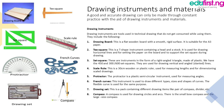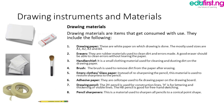Now let's move on to drawing material. Drawing materials are items that get consumed with use. They include: number one, drawing sheet — once a drawing sheet is used it can only be used for one drawing and after that you cannot reuse it again. Number two, eraser — an eraser is a rubber material used to clean dirt and errors made. A good eraser should be able to clean errors without tearing the paper.